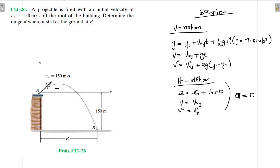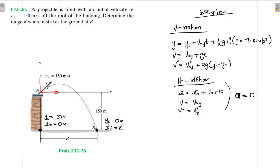Now let's write down the boundary conditions. Our y_0 in this case, if this is our reference, is equal to 150 meters. x_0 equals zero meters. y_final equals zero meters at point B. x_final equals the range, which we are looking for. Our initial velocity has two components: one horizontal and one vertical. The horizontal component we are calling v_ax.